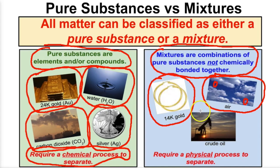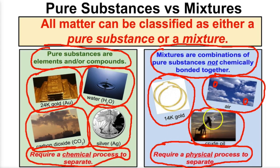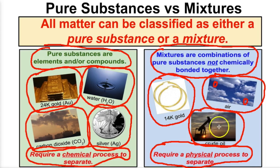If we take a look at crude oil, that's brought up from deep within the earth — it's a mixture of a bunch of different hydrocarbons. One thing you need to know about mixtures is that they're all going to require a physical process to separate. For example, if I wanted to separate the hydrocarbons that make up crude oil, we can set up fractional distillation, boil off those hydrocarbons at different temperatures, then condense them and separate the mixture that way.